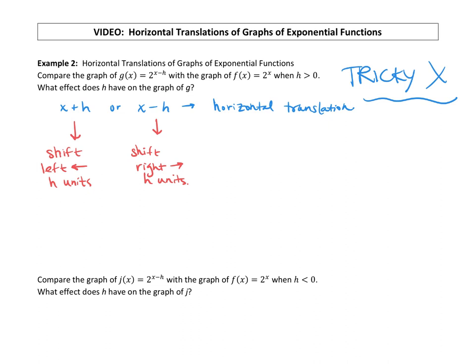So let's just take a look at an example. Let's say that we have the function g of x equals 2 raised to the x plus 3 power. So what we want to recognize is that x, it has a plus 3, that's our x plus h. That means we are going to translate. Translate is the same thing as shifting. Translate to the left 3 units.